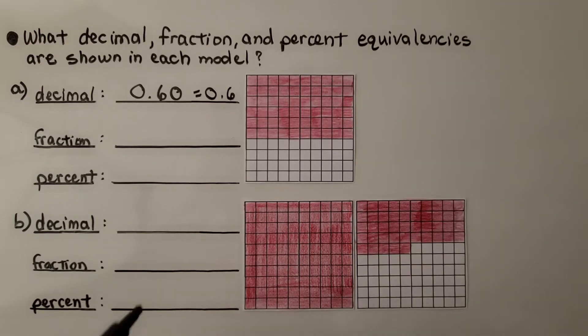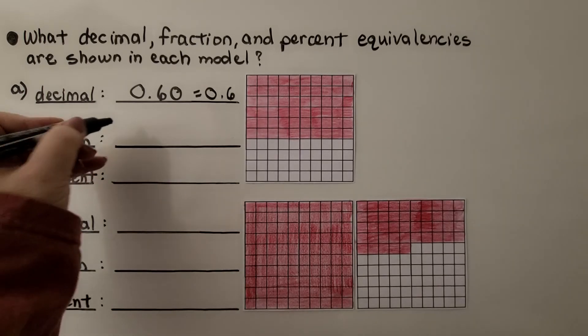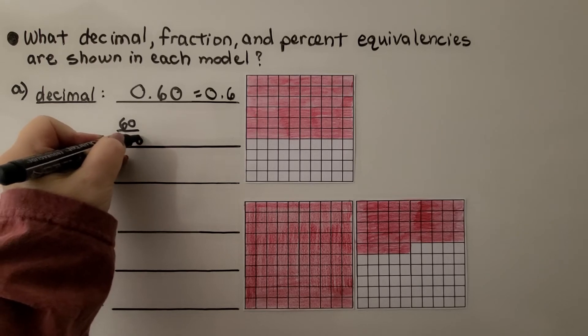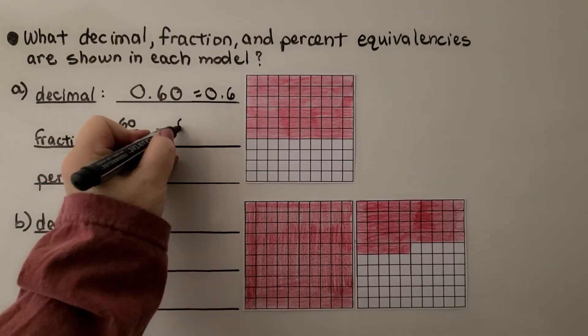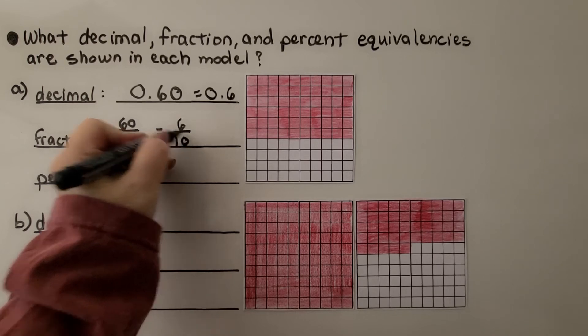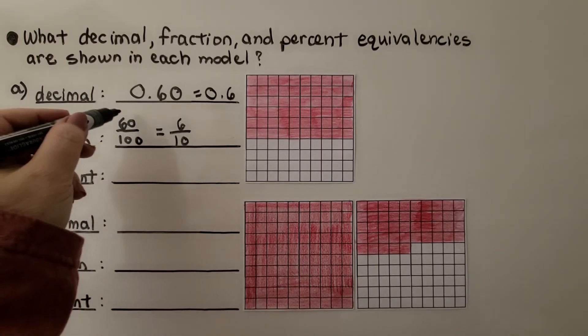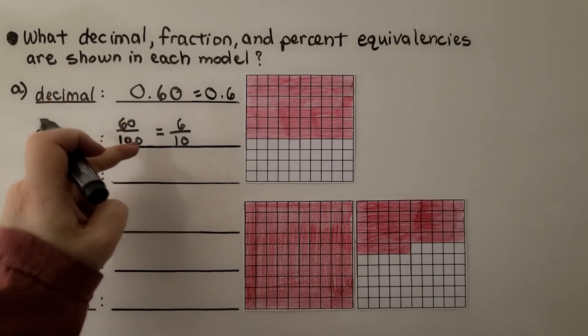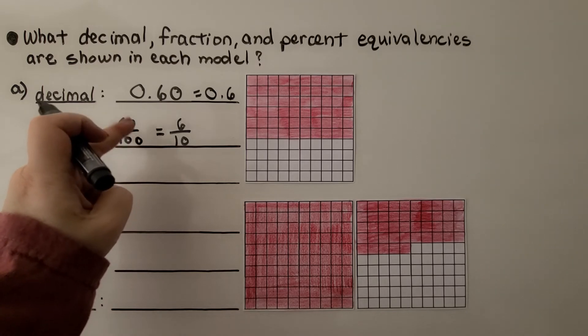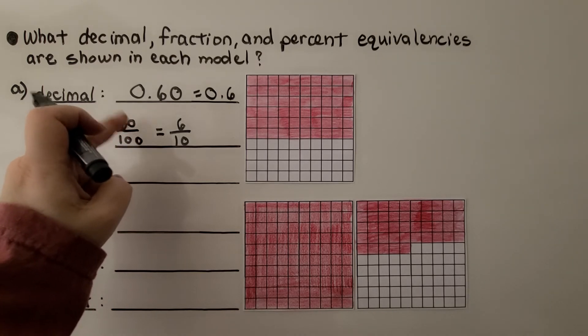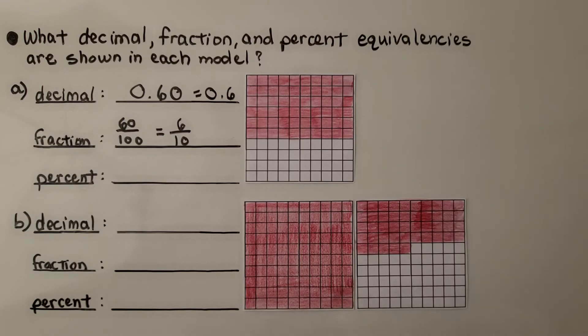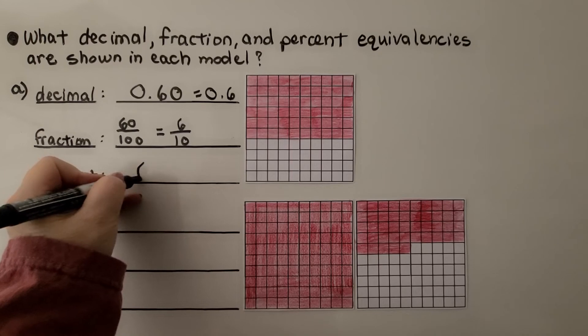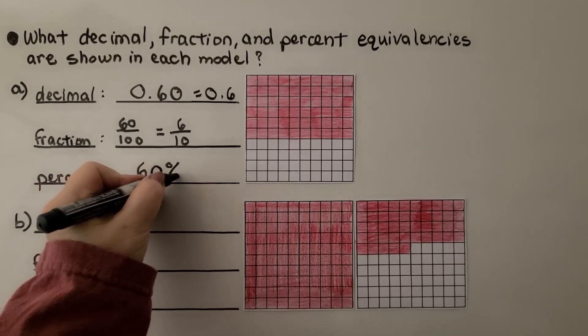As a fraction, we have 60 out of 100, which is also equal to 6 tenths. I'll show you a quick little trick. We could divide the numerator by 10 and the denominator by 10 to get 6 tenths. But because this ends in a zero and this ends in a zero, we could just erase these two zeros at the end and get 6 tenths. As a percent, we have 60 out of 100. We have 60 percent is shaded in.